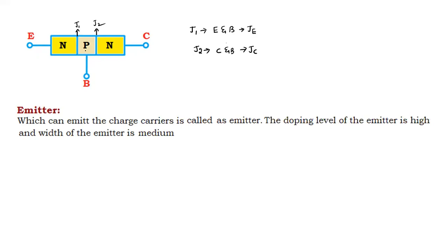Looking at the definitions of emitter, base, and collector: the emitter is the terminal which emits charge carriers. The doping level of the emitter is high, and the width of the emitter is medium.